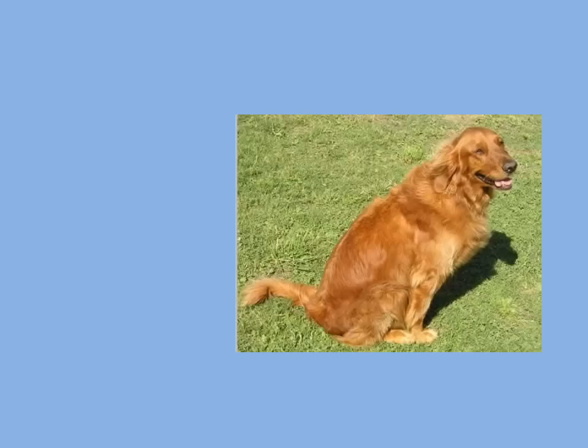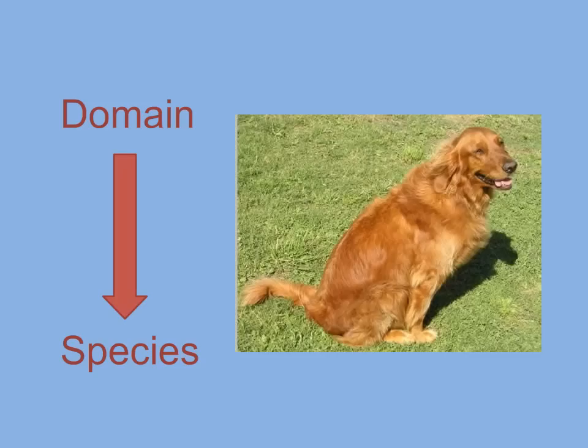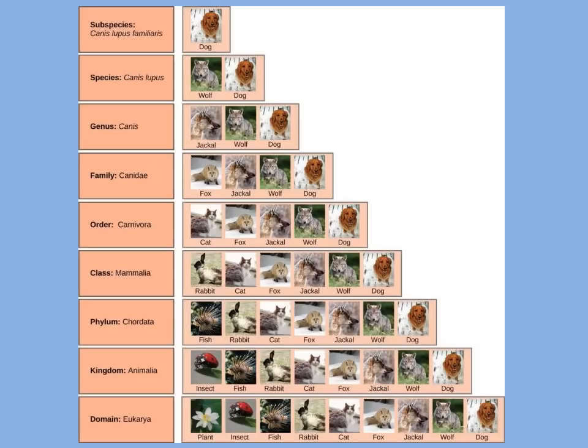Let's go from the most general taxon, the domain, to the most specific taxon, the species. Dogs are composed of eukaryotic cells and are placed in the domain eukarya. The other taxa, in increasing order of specificity, are kingdom, phylum, class, order, family, genus, and species.